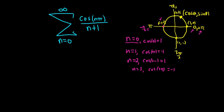So it looks like when n is even, we have 1. And when n is odd, we have negative 1.